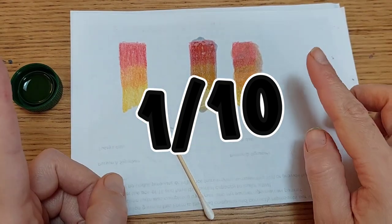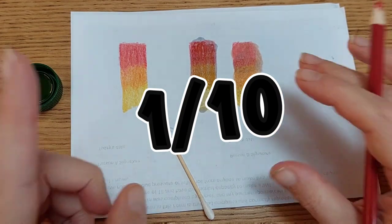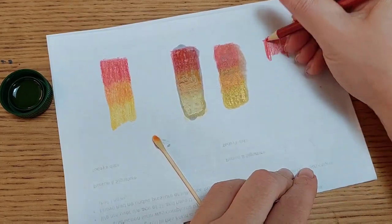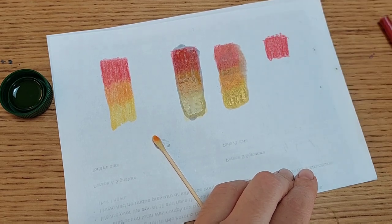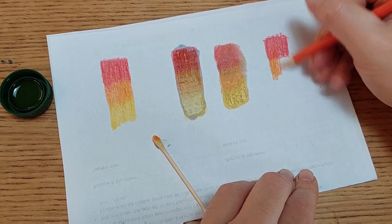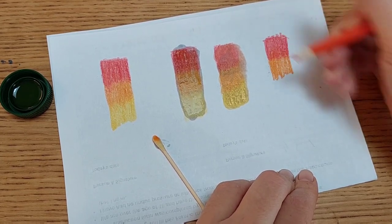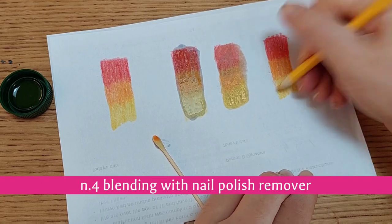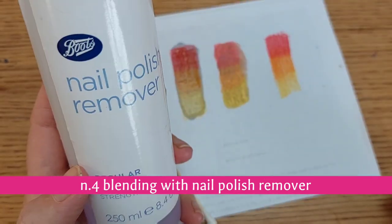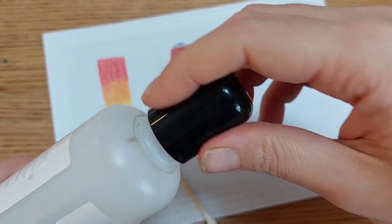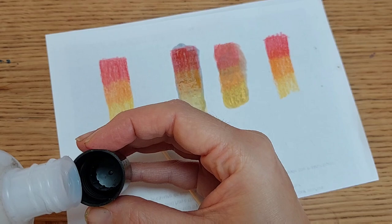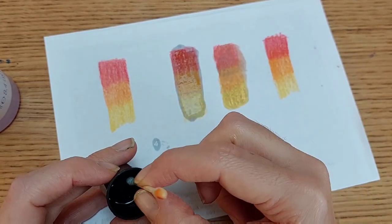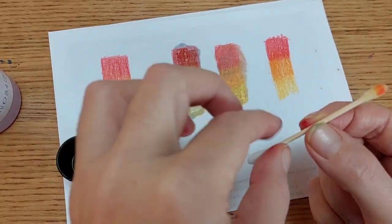But our color pencil hacks is not over. There is more hope for people like me that don't know how to blend. Olive oil is not the only trick. There are more and we are going to test this second one that involves some nail polish. And this is going to be our fourth art hack of the day. So here I have a basic nail polish remover and let's dip our cotton bud in here.